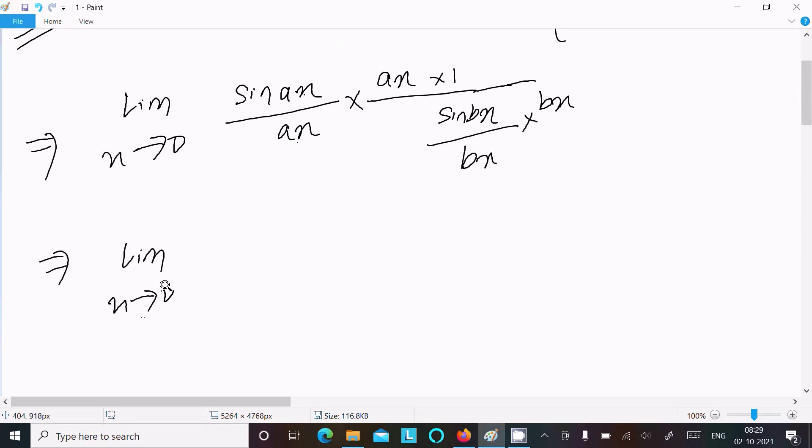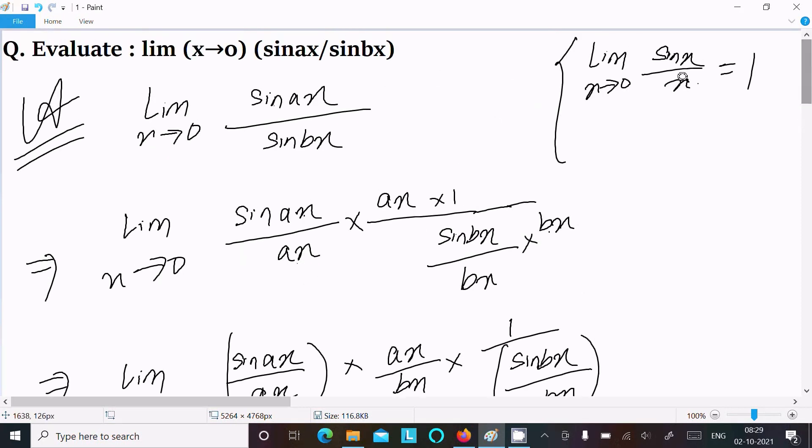Limit x tends to 0, so this here writing sin(ax) divided by ax, and this here we can write ax divided by this bx, writing here. After that, 1 by sin(bx) divided by bx.